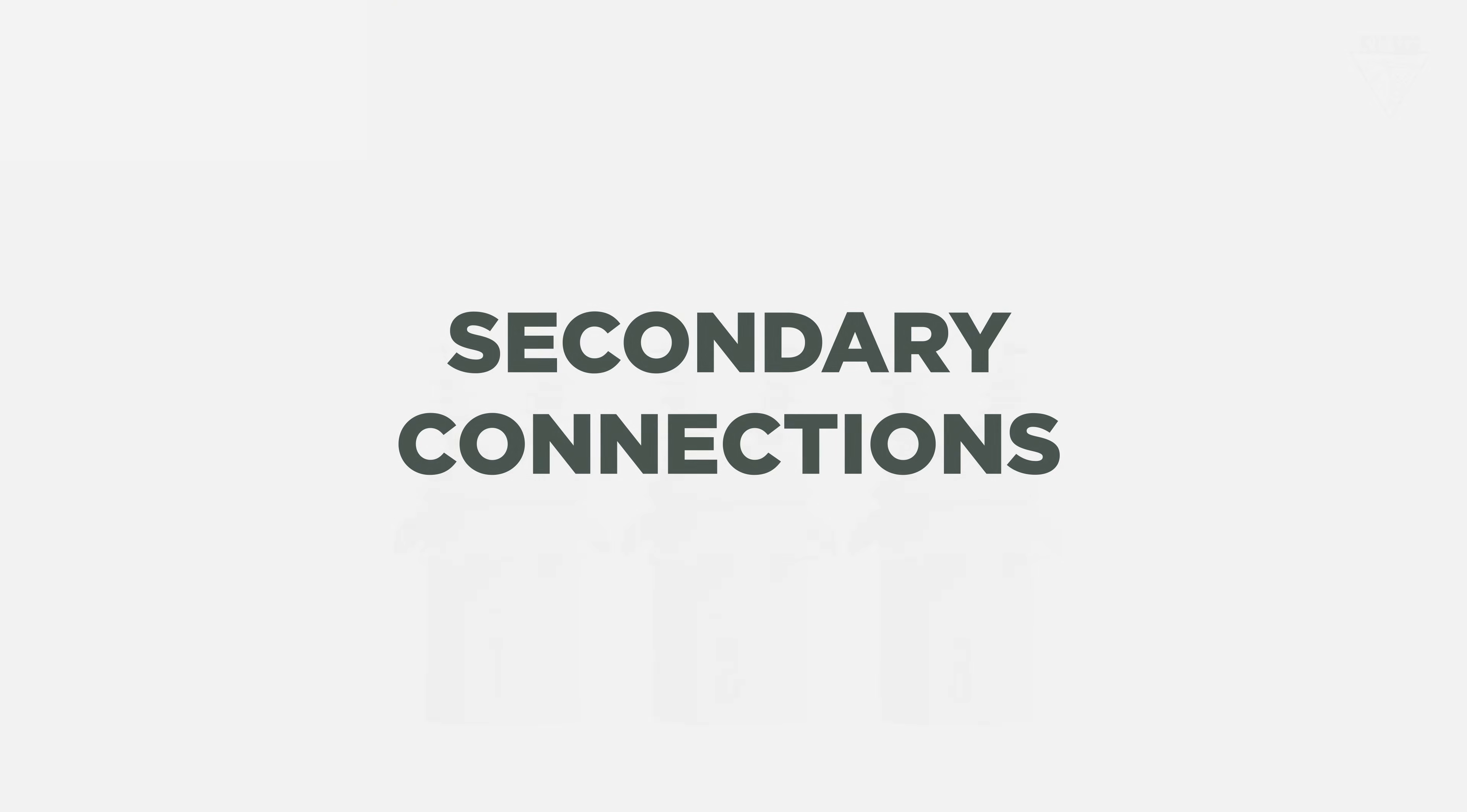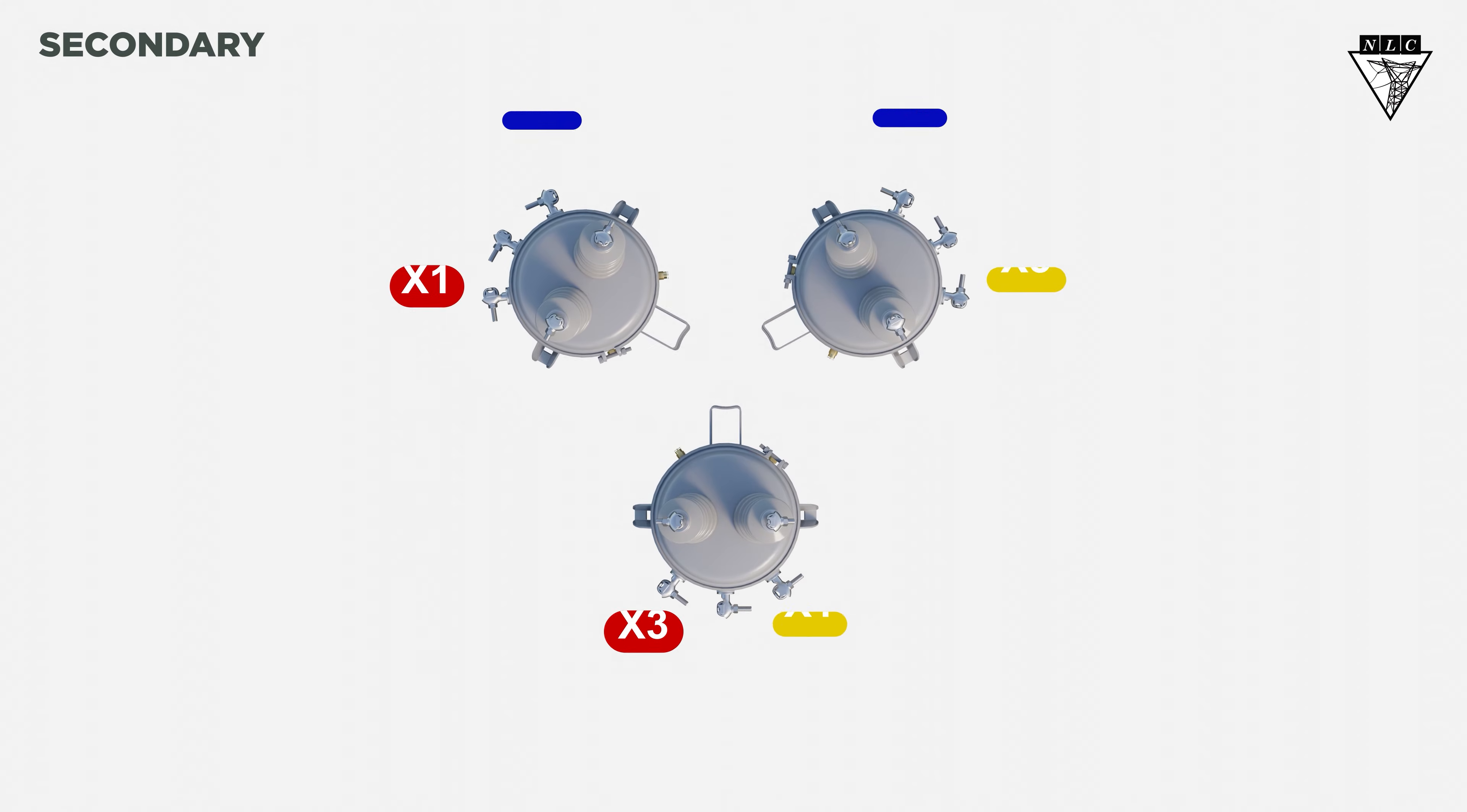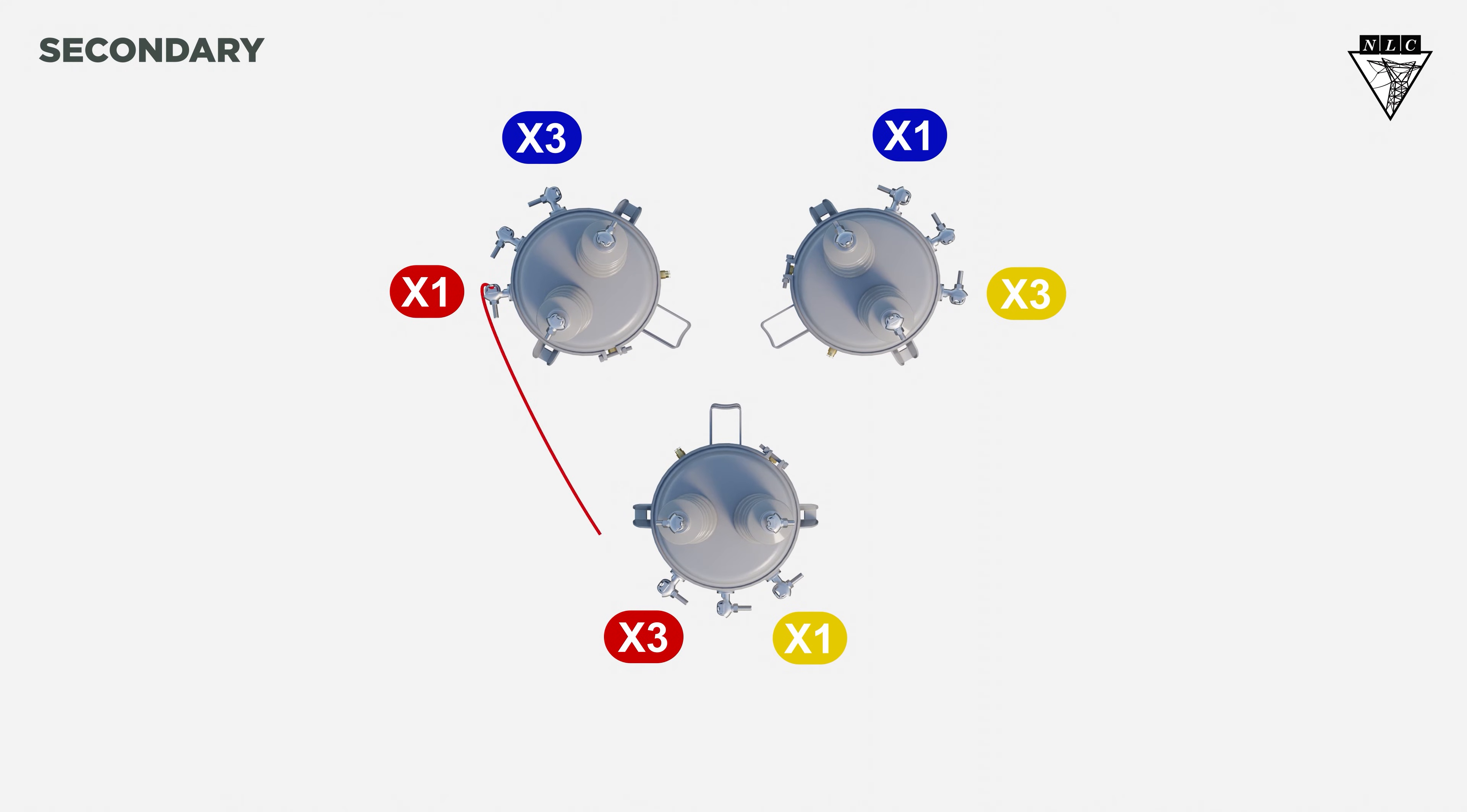Let's transition to the secondary connections. Start by connecting the X1 of the first transformer to the X3 of the second transformer. Connect the X1 of the second transformer to the X3 of the third transformer.